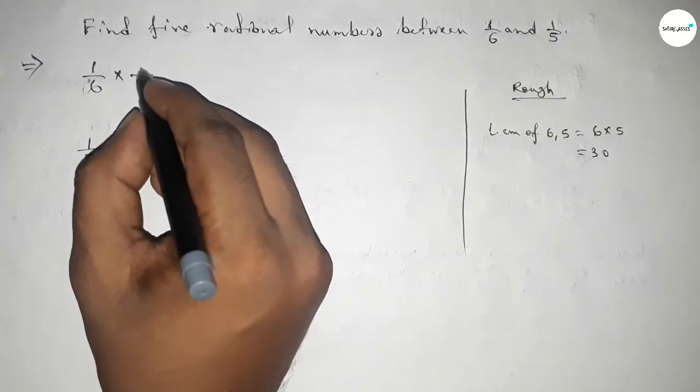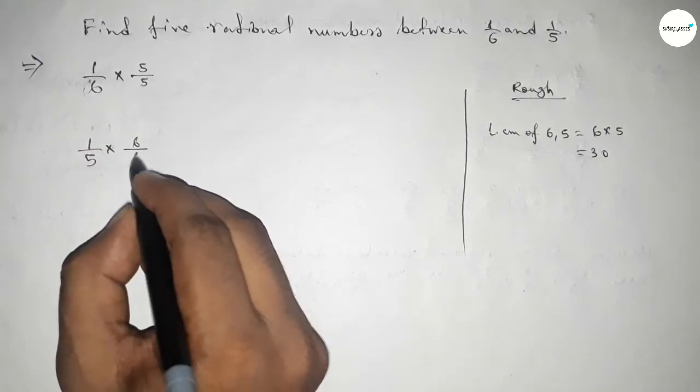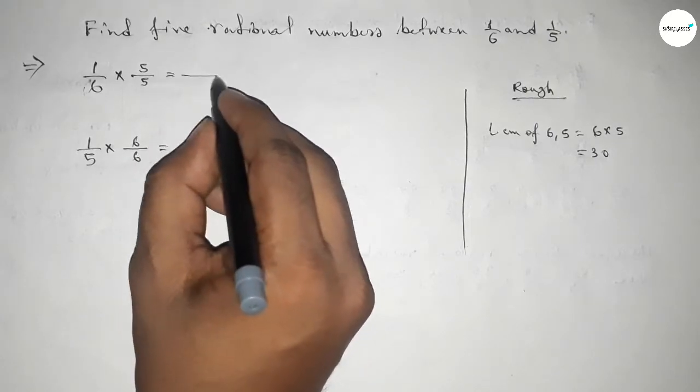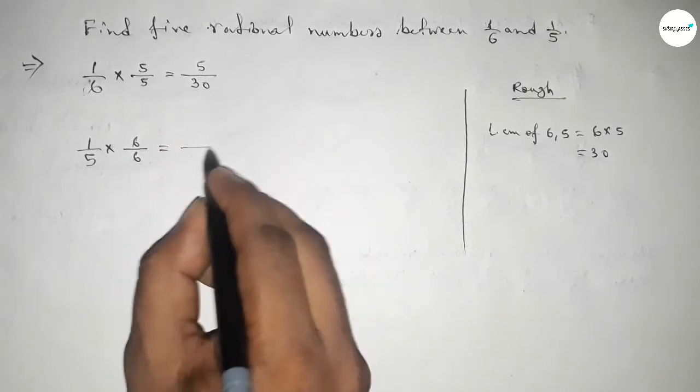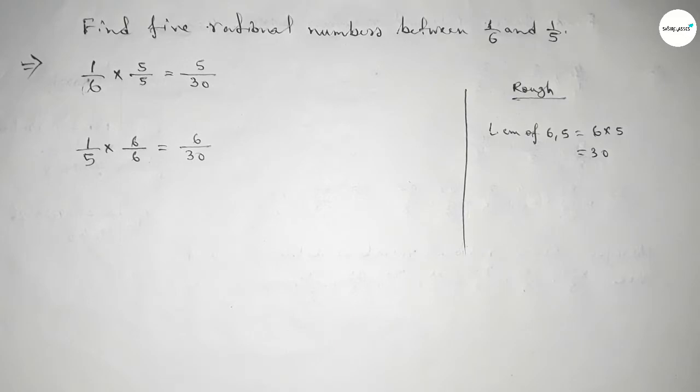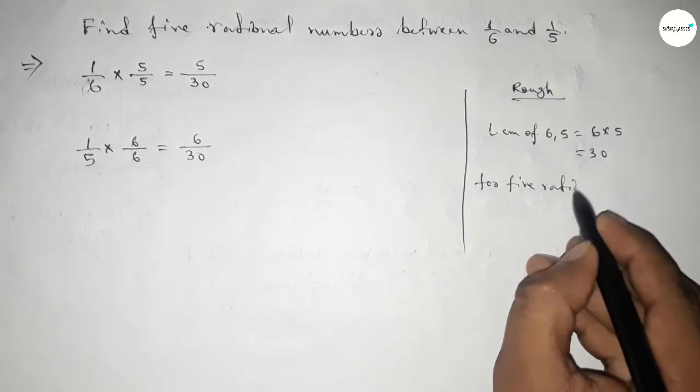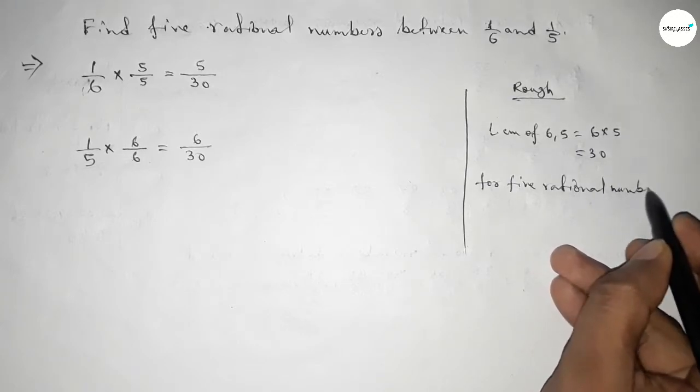First here 5 and here we should multiply by 6 to get the denominator of both 30. So this is 30, so 5 over 30 and this is 6 over 30. Now for finding 5 rational numbers between any two numbers we have to follow this method.